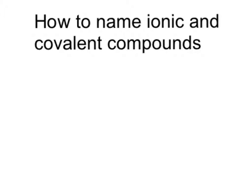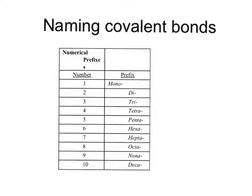How to name ionic and covalent compounds. Whatever the prefix is determines how many atoms you have. For example, 'di' means two. A way to remember that: di means two — dice, two.